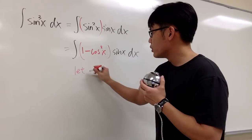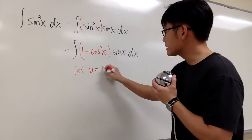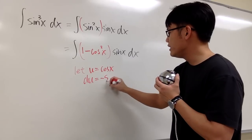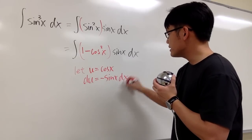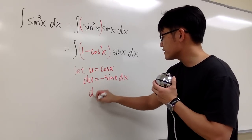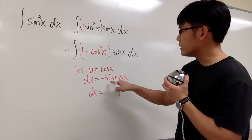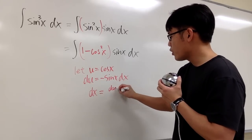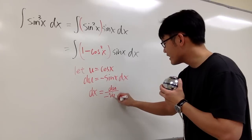So what I can do is, I can just let u equals cosine x. And then we can get du equals negative sine x dx, and then let me just isolate the dx here. We can divide both sides by negative sine x, so dx will be the same as du over negative sine x.